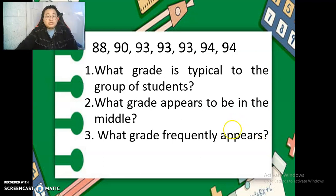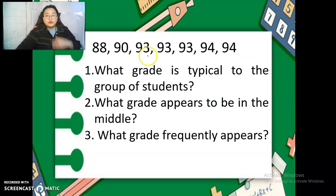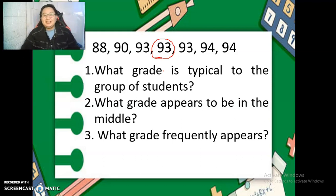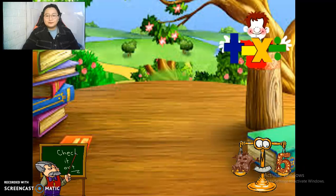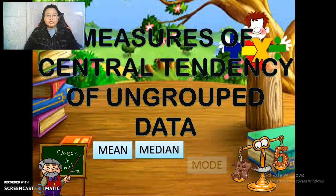Let's answer your quiz. What grade is typical to the group of students? It's average. Yes, it's 92.14. What grades appears to be in the middle? Let's try to look for the middle value. And the middle value is 93. What grade frequently appears? It's also 93. Very good.